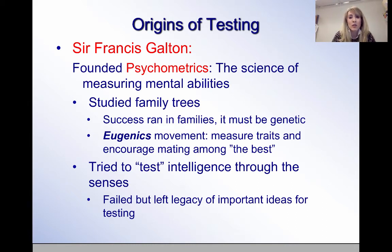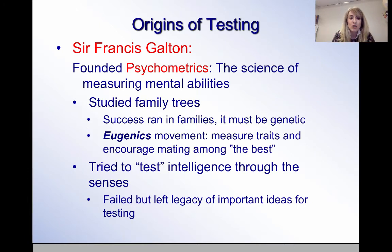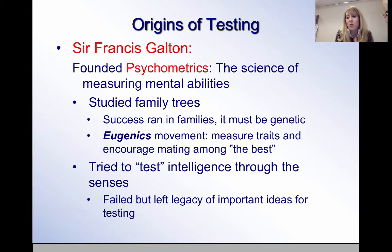Continuing with the family tree and genetics idea, Sir Francis Galton was also known for the eugenics movement — the belief that if you could measure traits, you could identify those with the strongest traits, encourage them to mate, and thereby produce the best possible evolutionary outcome going forward.